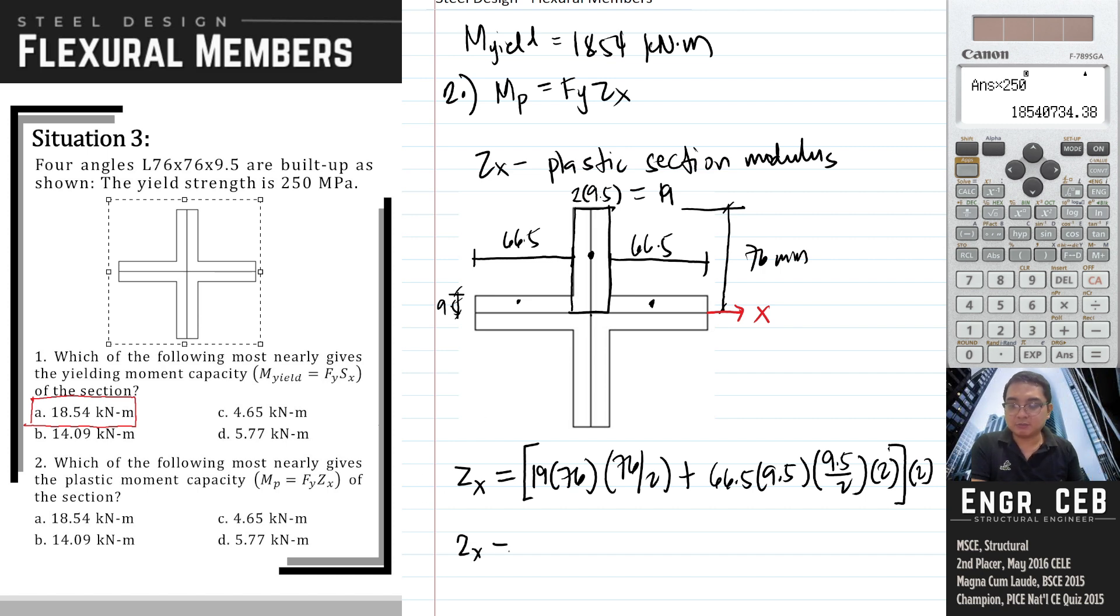Therefore, the plastic section modulus equals 121,747.25 mm cubed.